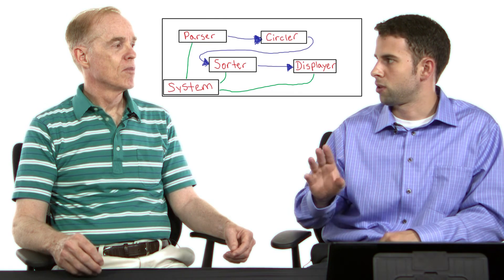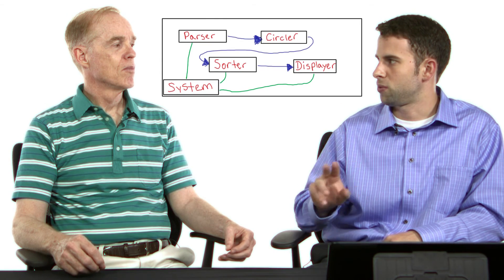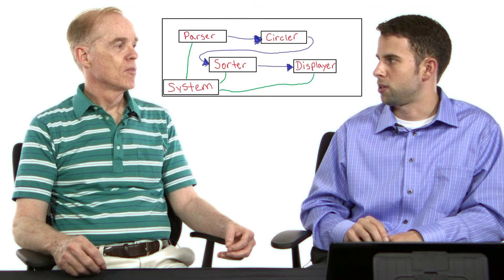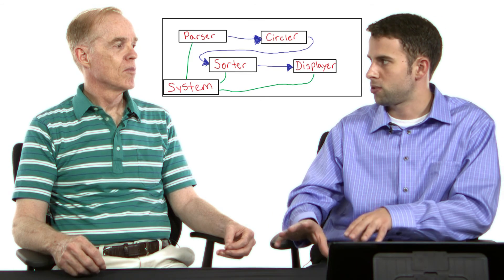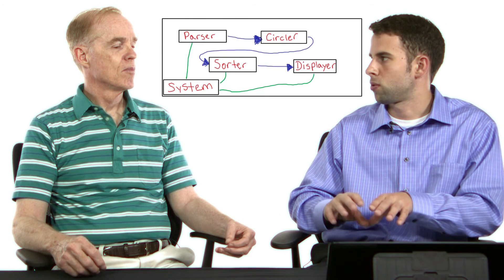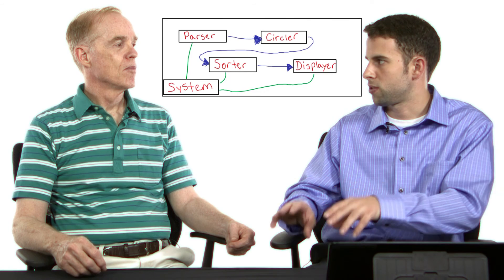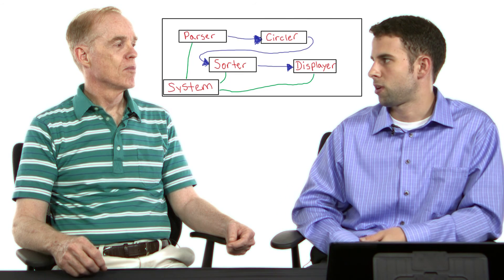The circler then creates all of our different shifted versions of the lines. That gets passed to the sorter, and then the sorter sorts it alphabetically and passes that on to the displayer.